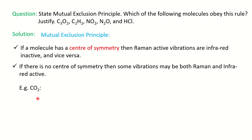Let's take CO2 as an example. You should know the shape of the molecule CO2. To find out whether a molecule has a center of symmetry, you find the center of the molecule — here it is the carbon atom. If you move in one direction, say towards the left, you approach the oxygen atom. Similarly, moving from the center to the right at the same distance, you again meet the oxygen atom. Since you meet the same atom at equal distances on both sides, we can say CO2 possesses a center of symmetry.